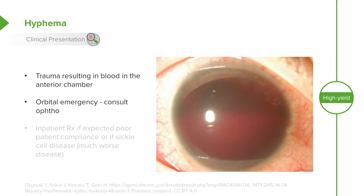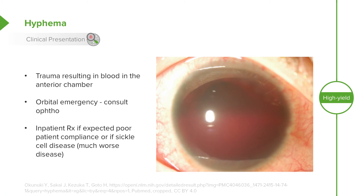The blood can interfere with drainage of fluid and result in glaucoma. Treatment is generally either in- or outpatient — we used to treat more inpatient, now more outpatient. We do admit infants and children if there's expected poor compliance or an underlying problem like sickle cell disease, which causes much worse outcomes. We generally don't want these patients running around too much, and bed rest is often recommended until it's healed.